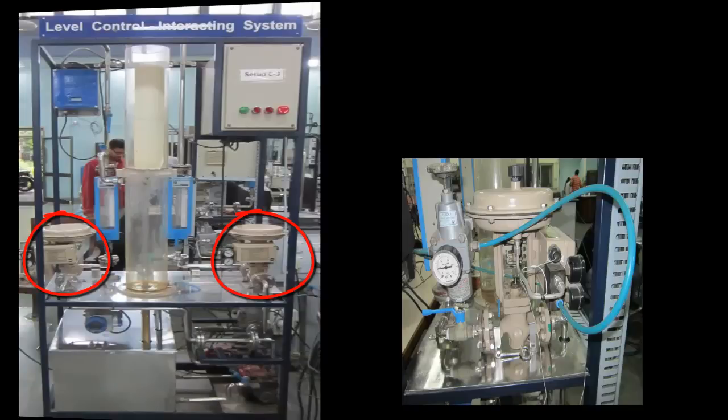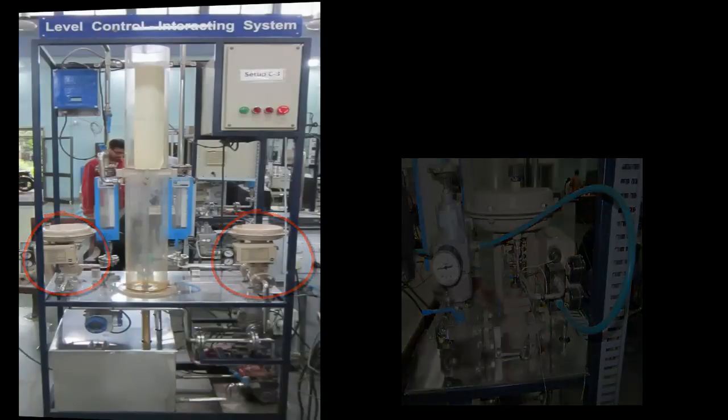Control valves are valves used to control conditions such as flow, pressure, temperature and liquid level by fully or partially opening or closing in response to signals received from controllers which in our case comes from LabVIEW. The one on the left controls the disturbance variable flow and the one on the right the manipulated variable flow.